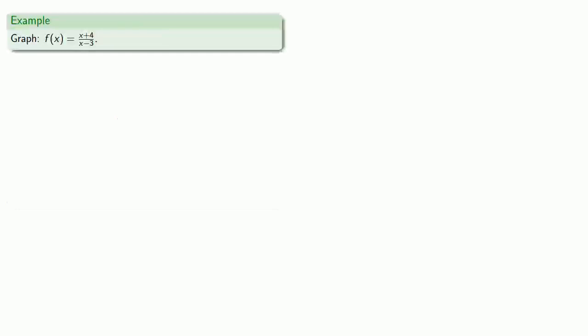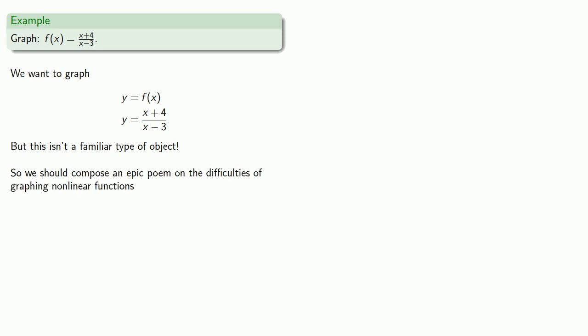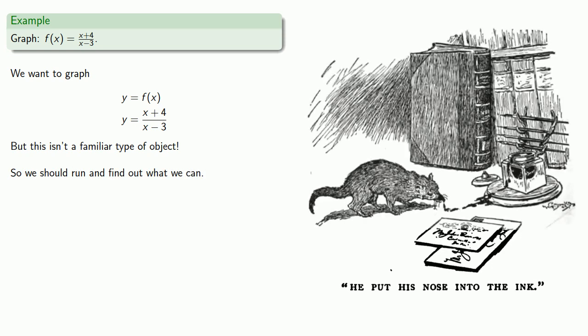So let's consider this graph. We want to graph y equals f(x). Equals means replaceable. So we'll replace f(x) with (x + 4)/(x - 3). This is the graph of a... We don't know what this is a graph of. This isn't a familiar type of object. So we should run and find out what we can.